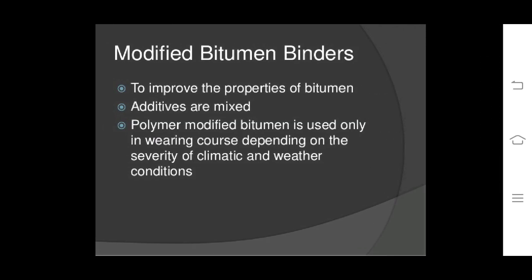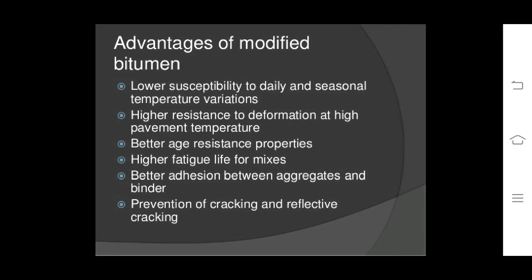Modified bitumen binders: to improve the properties of bitumen, additives are mixed. Polymer modified bitumen is used in wearing course depending on the severity of climatic and weather conditions. Advantages include: it lowers susceptibility to daily and seasonal temperature variations; it has higher resistance to deformation at high pavement temperature; it has better fatigue resistance properties; it has higher fatigue life for mixes; it has better adhesion between aggregates and binders; and it prevents cracking and reflective cracking in the structure.